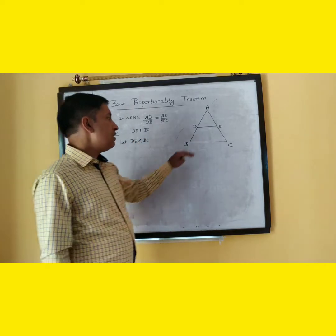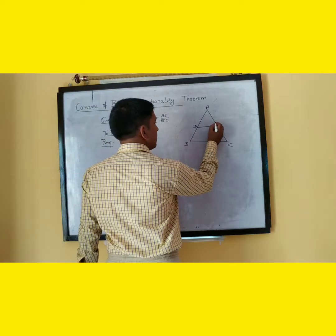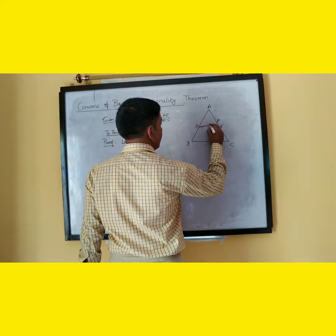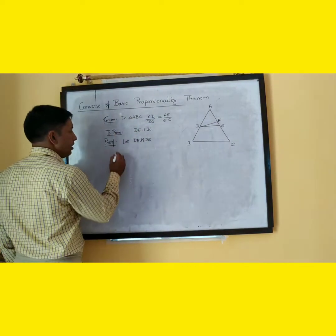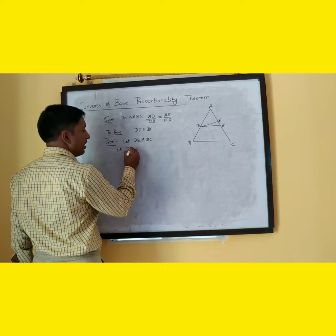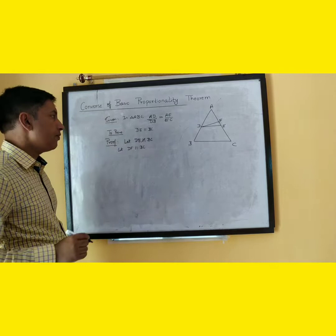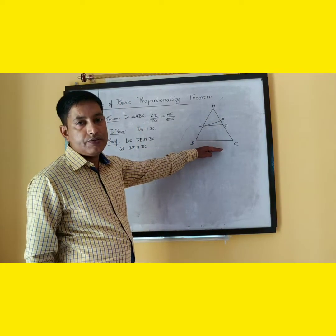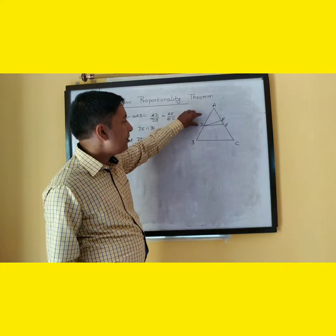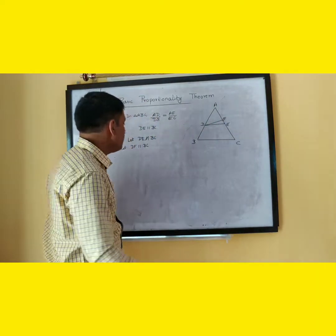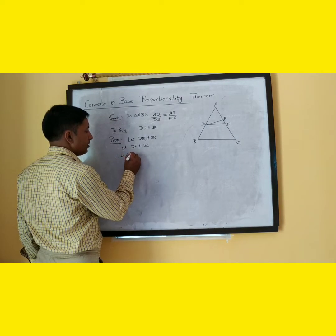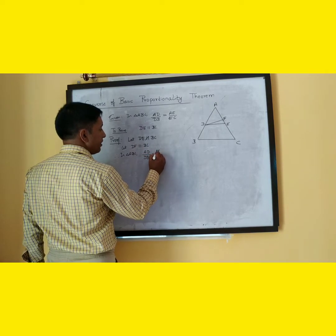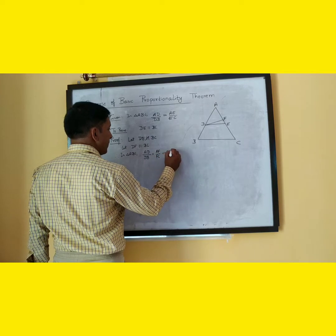Since we assume that DE is not parallel to BC, there must be another point F on AC such that DF is parallel to BC. Let DF be parallel to BC. Therefore, since DF is parallel to BC, we can apply BPT. Therefore, in triangle ABC, AD by DB is equal to AF by FC, according to BPT.